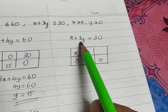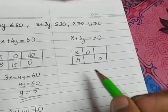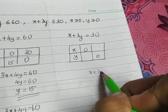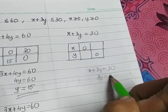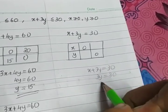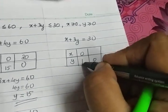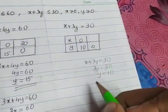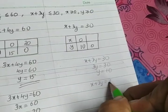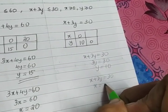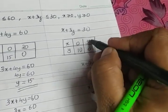The next equation is x plus 3y equal to 30. When I substitute x as 0, 3y will be equal to 30 and y will be equal to 10. So we are getting one point as (0, 10). To find the next point, we substitute the value of y as 0, and we get x as 30. So the second point is (30, 0).